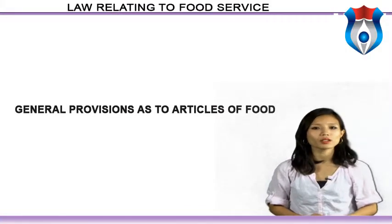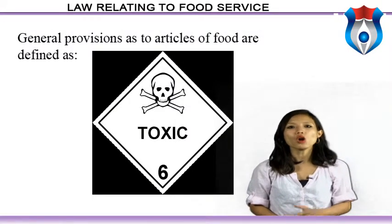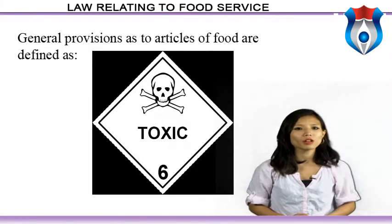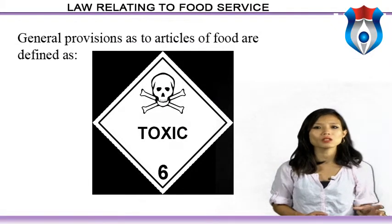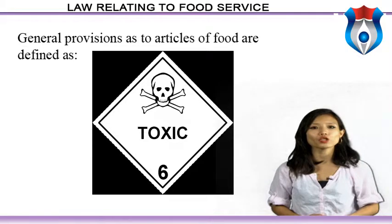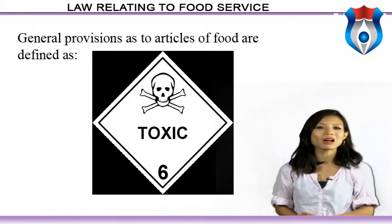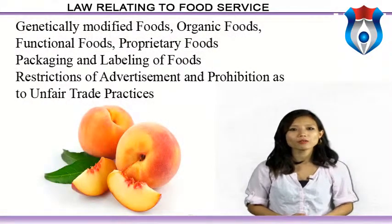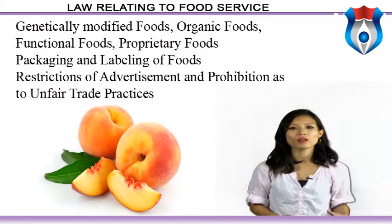General provisions as to articles of food state: no article of food shall contain any food additive or processing aid unless it is in accordance with the provisions of this act and regulations made thereunder. No article of food shall contain any contaminant, naturally occurring toxic substances, toxins, hormones or heavy metals in excess of such quantities as may be specified by regulation. No article of food shall contain insecticide or pesticide residues, veterinary drug residues, antibiotic residues, solvent residues, pharmacologically active substances, or microbiological counts in excess of such tolerance limits as specified by regulation. This covers genetically modified foods, organic foods, functional foods, proprietary foods, packaging and labeling, restrictions on advertisement and prohibition of unfair trade practices.